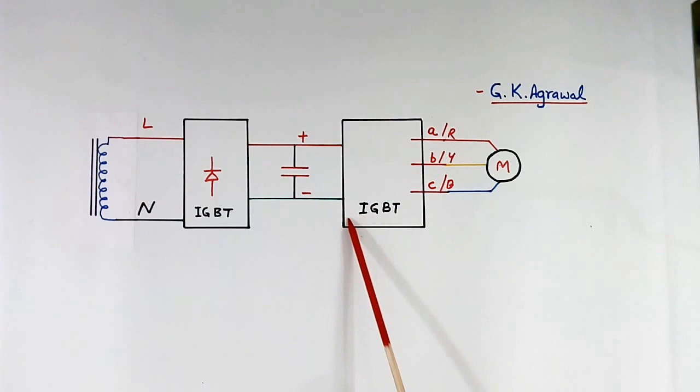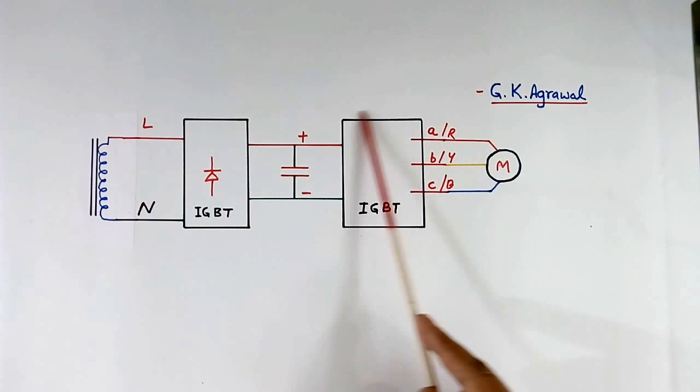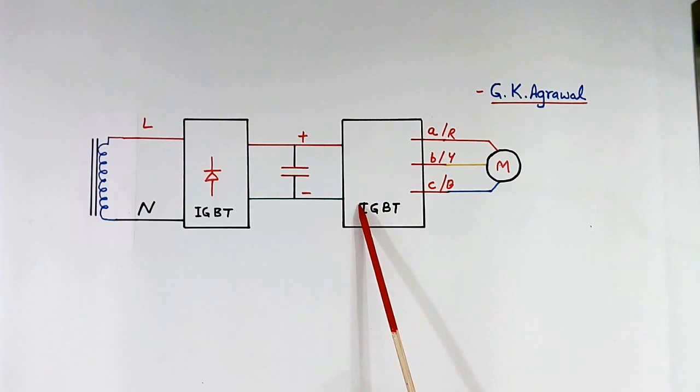This is inverter. This inverter convert DC supply into 3 phase AC supply. This is made of IGBT. Nowadays IGBT are used. This output voltage and frequency both are controlled of this 3 phase supply to control the motor speed.